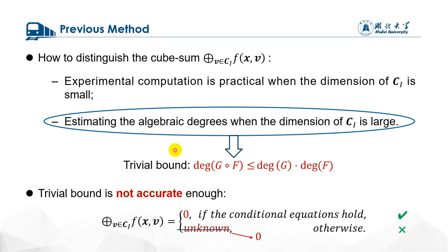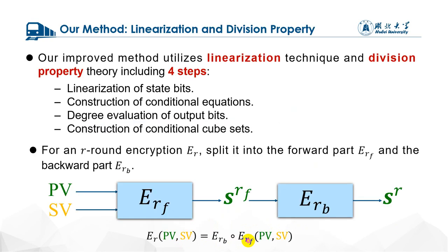The common way to distinguish the cube sum is to evaluate the algebraic degrees of the function f using the trivial bounds. That is, the degree of the composition function f is upper bounded by the product of degree g and degree h. Trivial bound is straightforward, but is not accurate enough, so it is possible to construct an invalid distinguisher. That is to say, whether the conditional equations hold or not, the cube sum is always equal to zero. In order to avoid this situation, we proposed an improved framework using the linearization technique and division property method, including four steps.